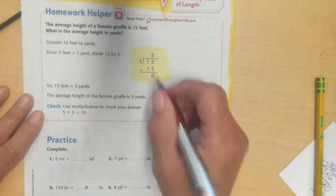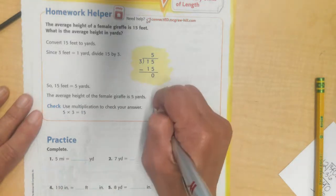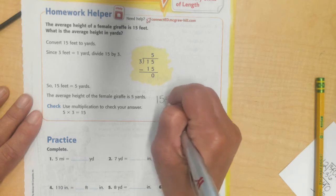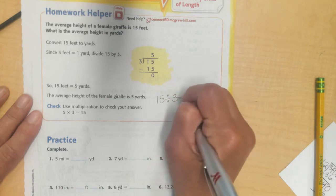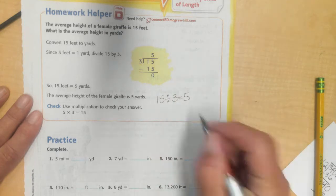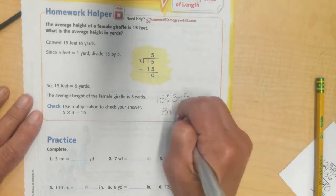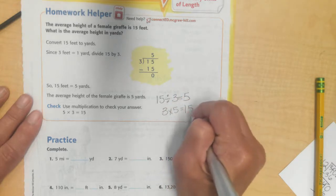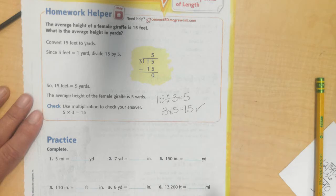If 15 divided by 3 equals 5, then I should have 3 times 5 should be equal to 15. If I did it right, it is. Yes, I checked my answer.